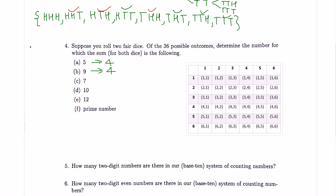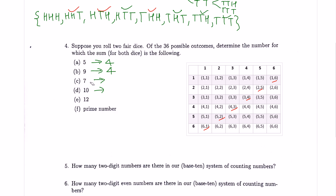Part C: how many ways can we get a sum of 7? That's (6,1), (5,2), (4,3), (3,4), (2,5), (1,6) — so 1, 2, 3, 4, 5, 6 ways. There are 6 ways to get a sum of 7.